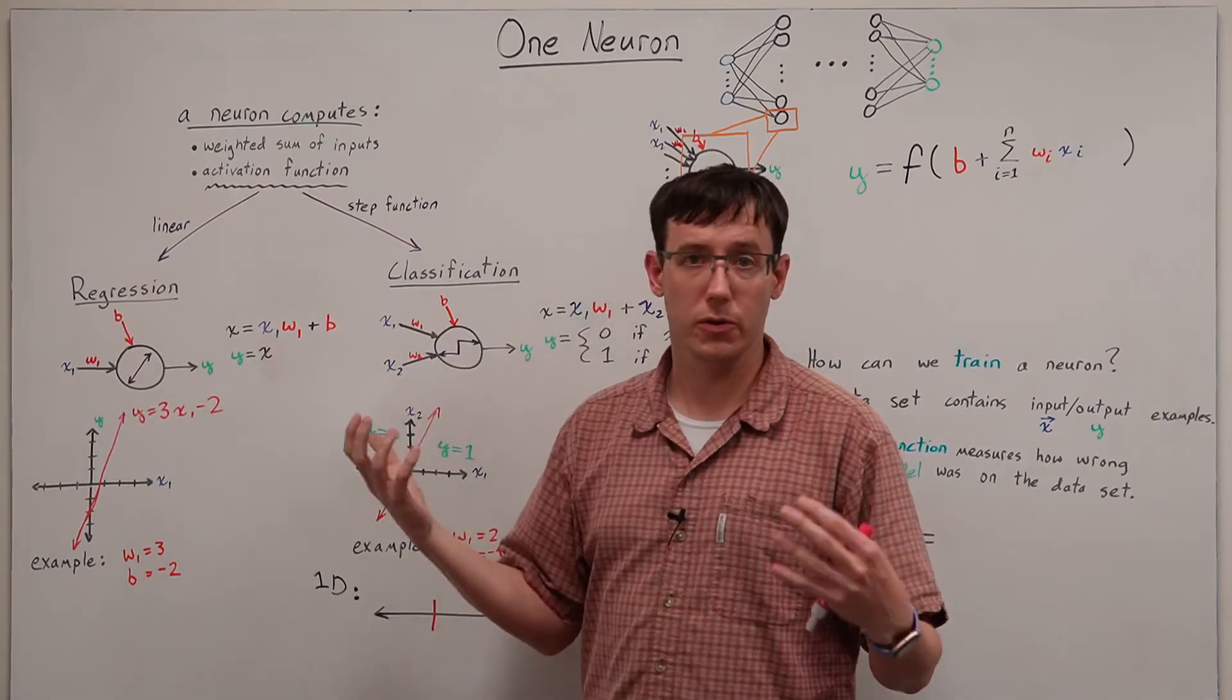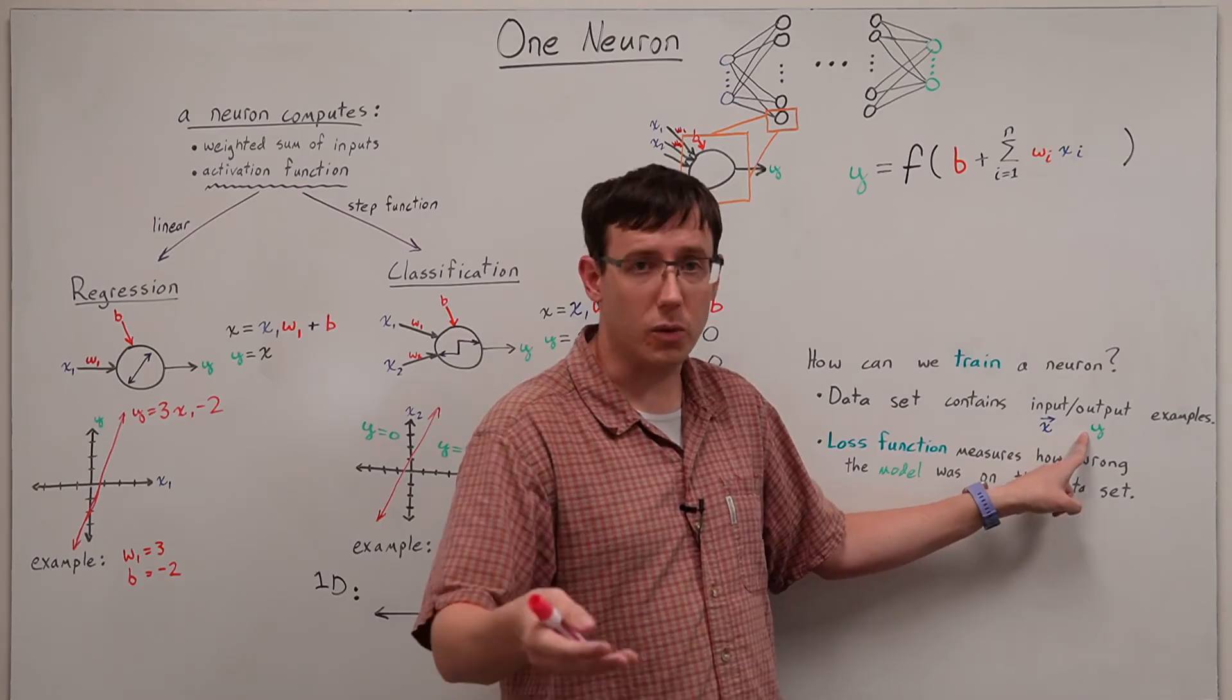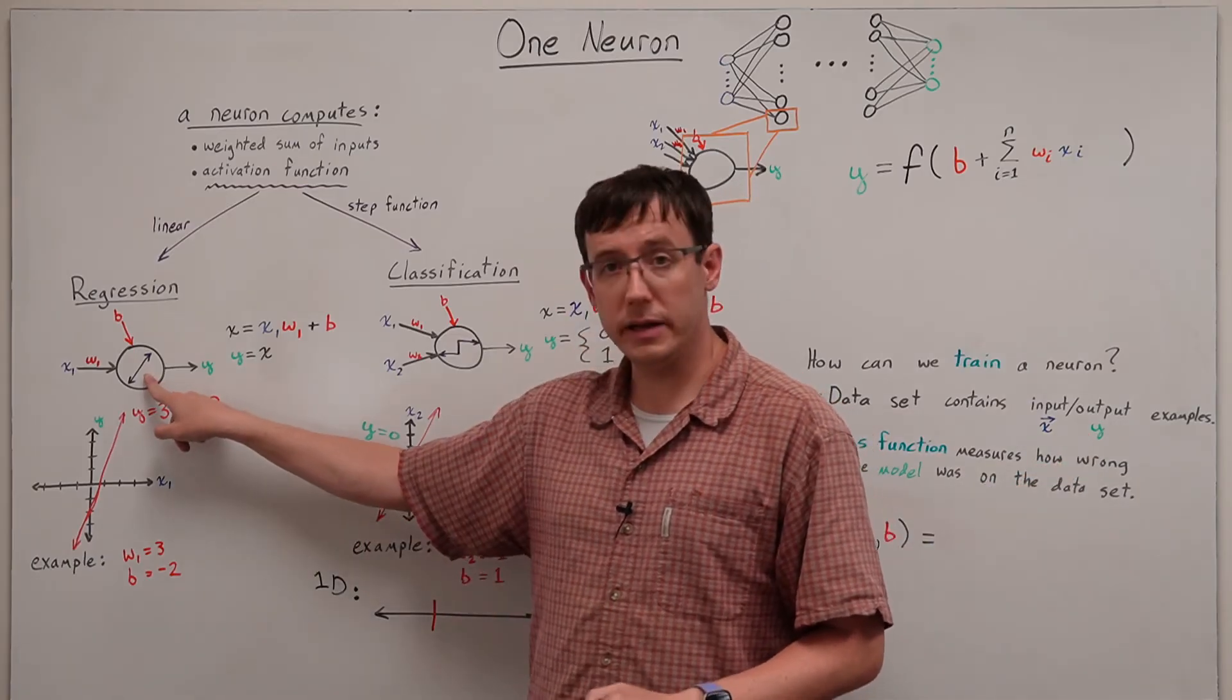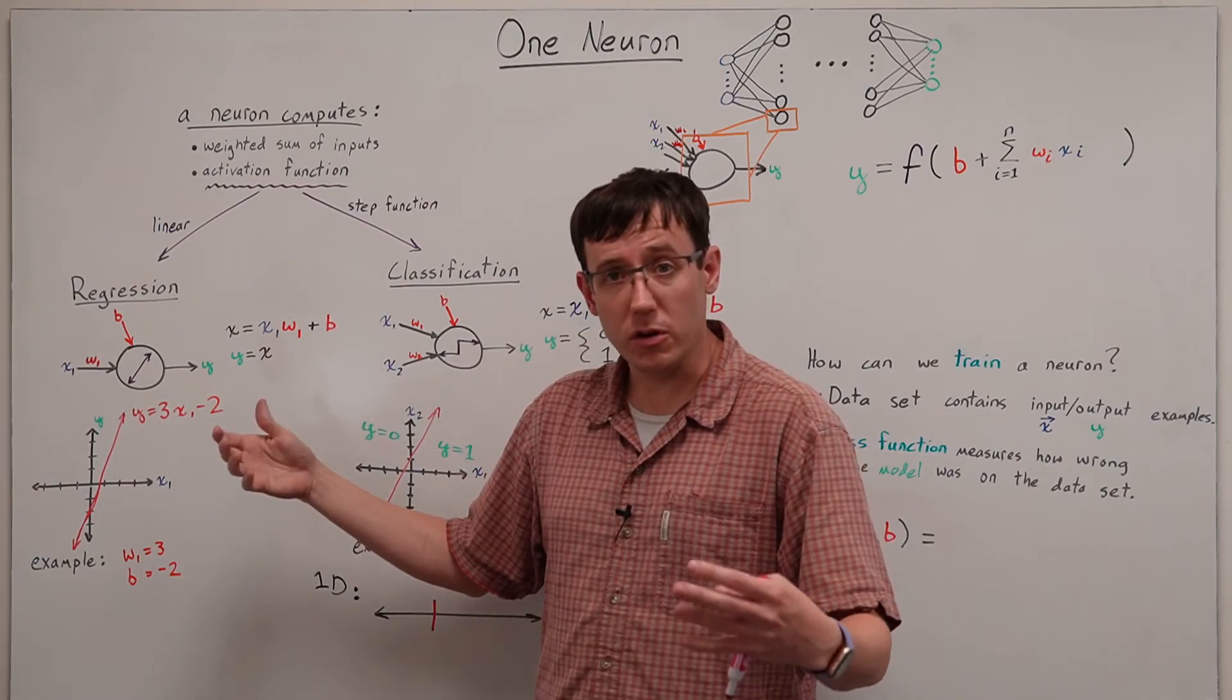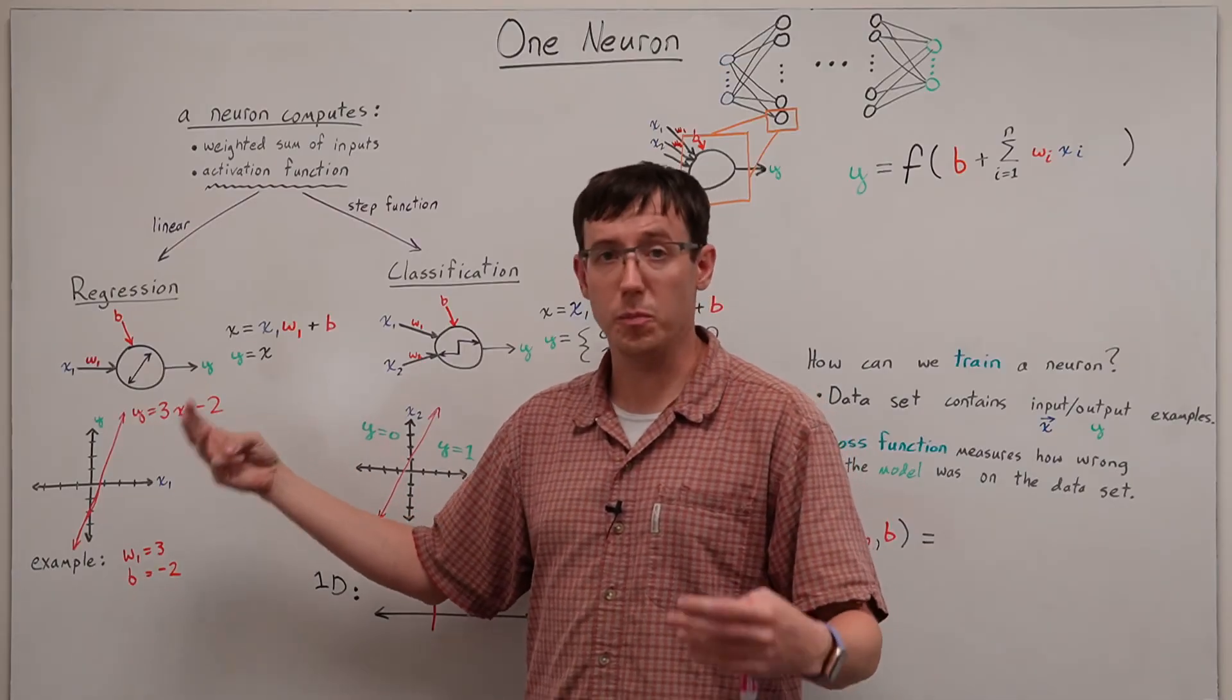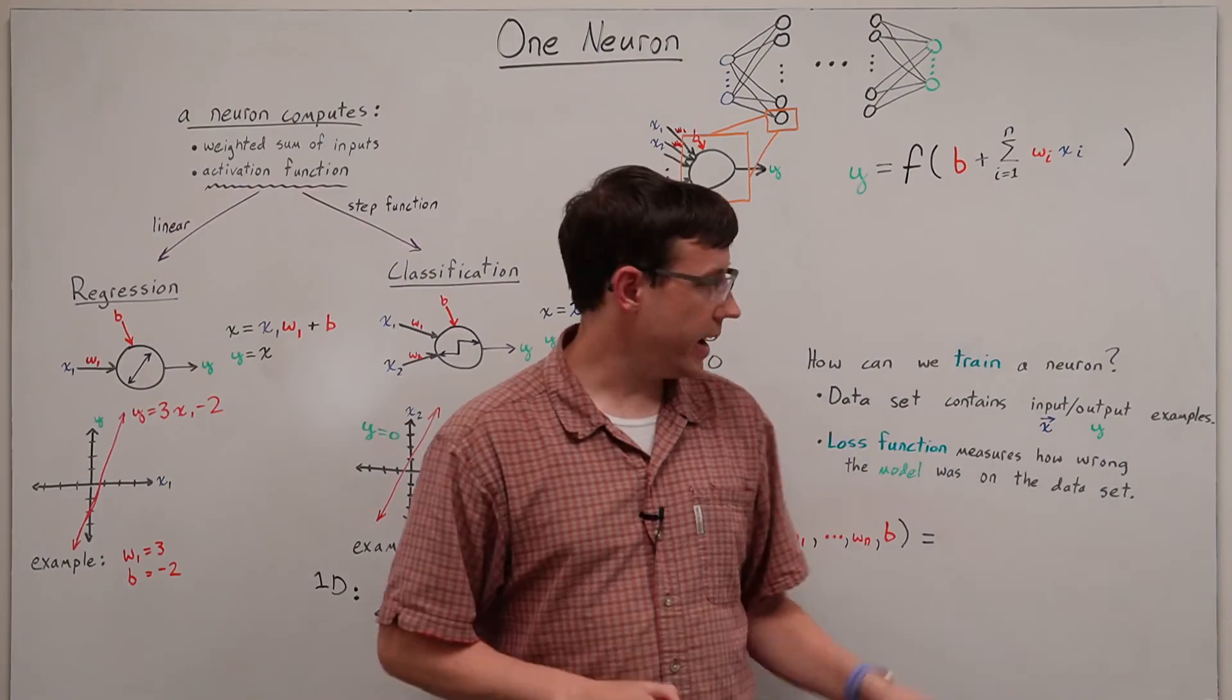So if our input examples were two-dimensional and our outputs were continuous, then we would pick a linear neuron with two inputs and therefore two weights, and the machine learning problem would be to choose w1, w2, and b in a way that best represents the examples in the data set.